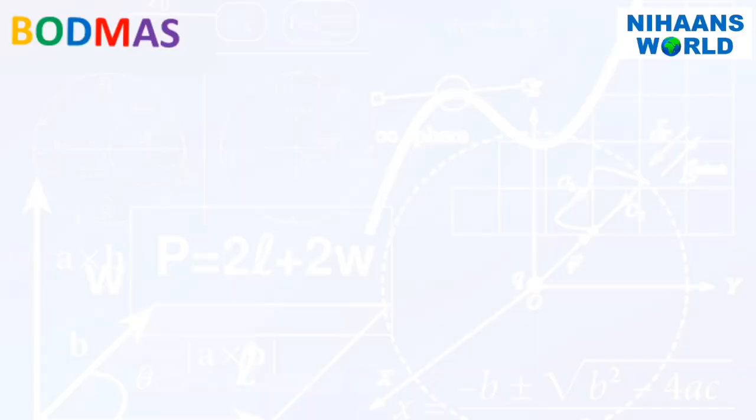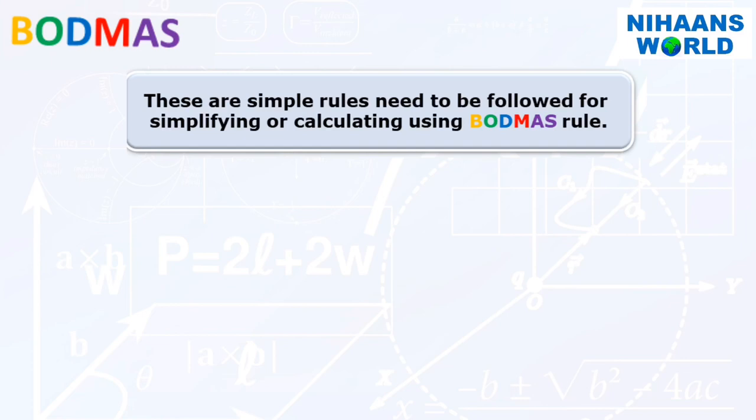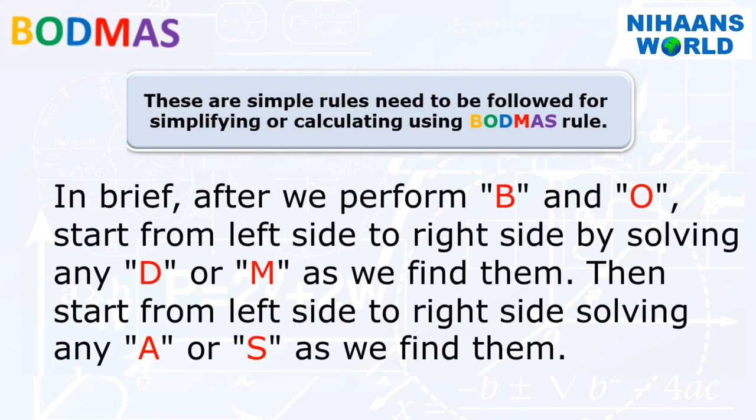These are simple rules need to be followed for simplifying or calculating using BODMAS rule. In brief, after we perform B and O, start from left side to right side by solving any D or M as we find them. Then start from left side to right side solving any A or S as we find them.